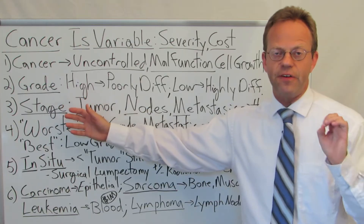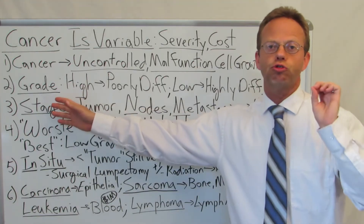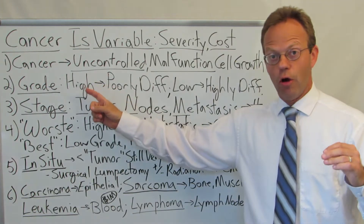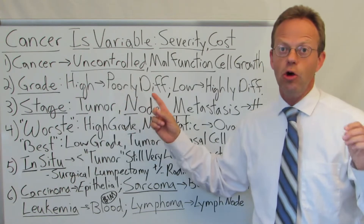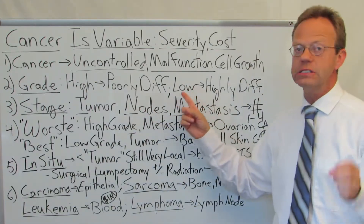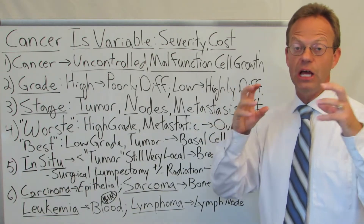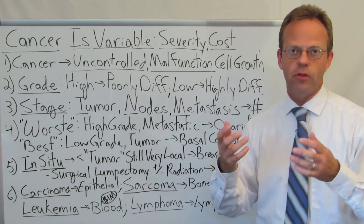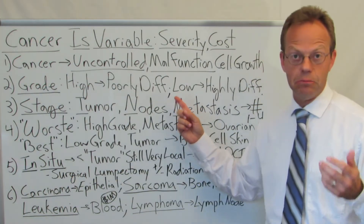There are different ways to classify cancers, and you hear these terms thrown around. First is the cancer grade, which is what the cancer looks like under the microscope to the pathologist. High grade means the cells are poorly differentiated — they look really abnormal, so high grade is bad. Low grade means the cells are highly differentiated — they look like the cells they're supposed to look like, such as a skin cell or a colon cell. So low grade is better.